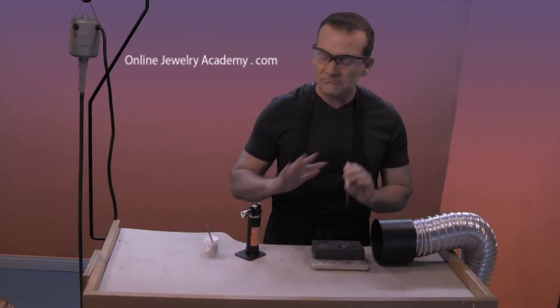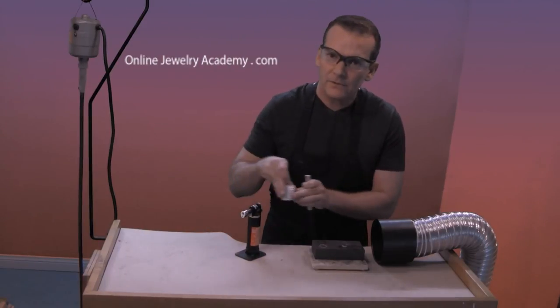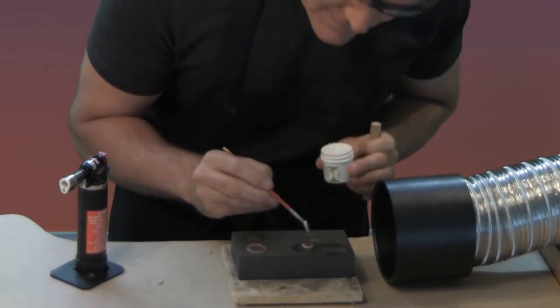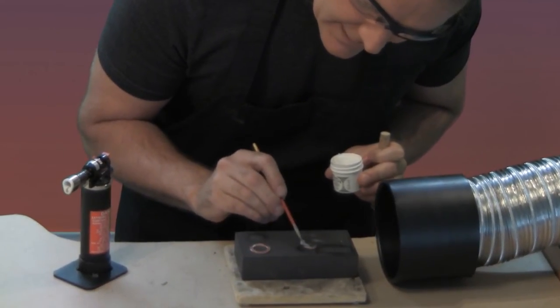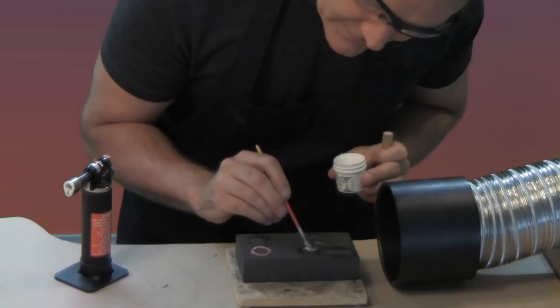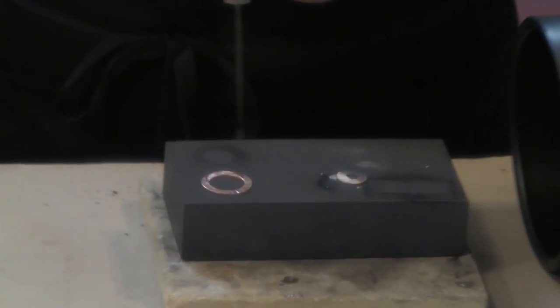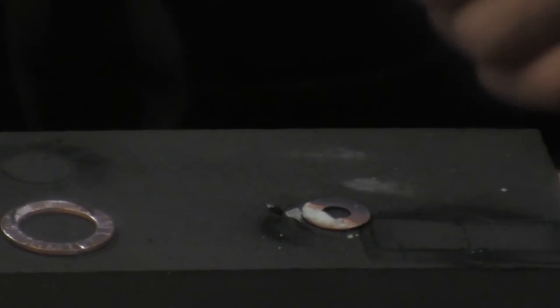Okay. After that's done, no need to even wait for it to cool. You'll take your flux and just repaint the flux directly on top of the melted solder, just like that. The heat from the piece will help to dry out the flux and you're almost immediately ready to go to the next step.